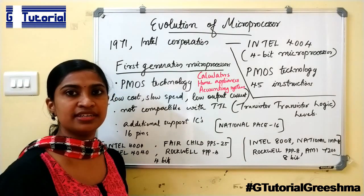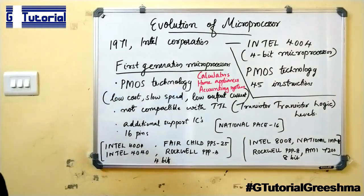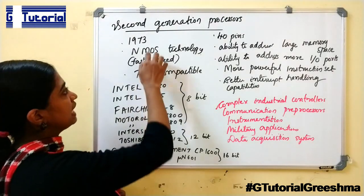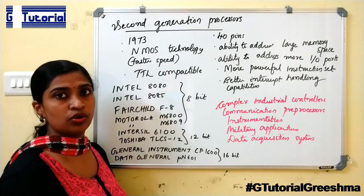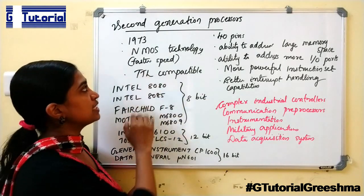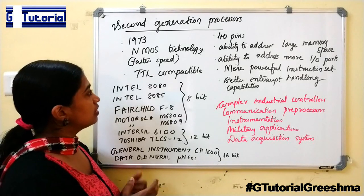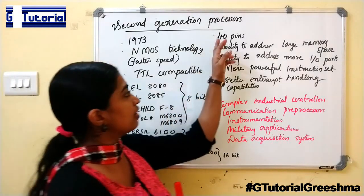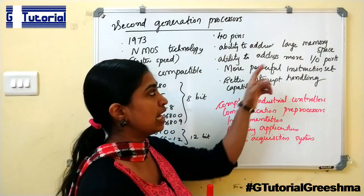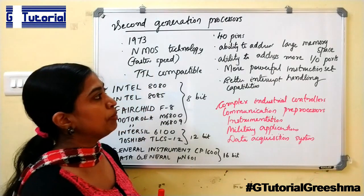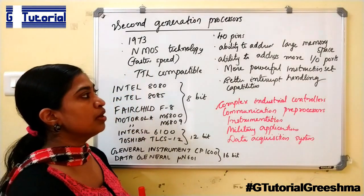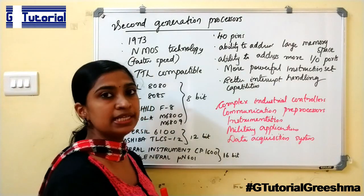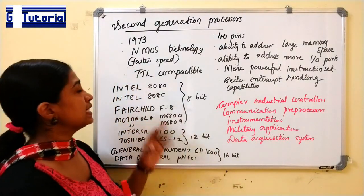Now let us see about the second generation processors. It was first released in 1973. It used NMOS technology, which provided faster speed than PMOS technology. The processors were TTL compatible. They had 40 pins and the ability to address large memory space, address more input-output ports, a more powerful instruction set, and better interrupt handling capabilities.